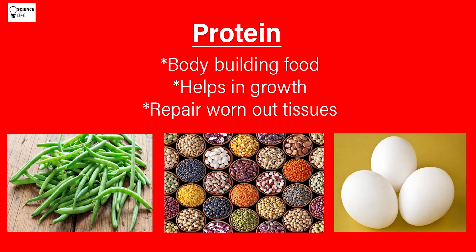The third category is proteins. Proteins are body-building foods. They help us in growth, and their main function is growth of our body plus repair of worn-out tissues. Having protein in our diet helps us grow faster and in a good manner. We give high-protein diets to babies because their bodies are growing. Sports persons also need proteins because they are building their bodies. Sources of proteins are pulses, soya bean, eggs, and meat.